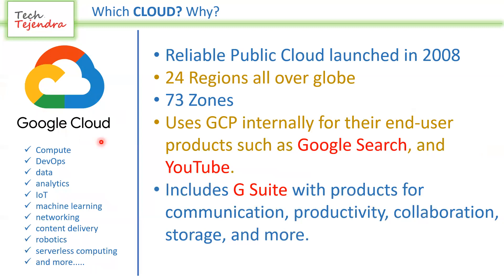Google Cloud also provides the same services as AWS, Azure, and IBM Cloud. GCP's main marketing claim is that Google's own top tools — Google Search and YouTube — run inside the Google Cloud Platform. They claim that if Google Search and YouTube perform so well globally with lowest latency, your end-user applications will also run very well. GCP was launched in 2008 and has 24 regions and 73 zones globally. Google Suite is also considered a reliable offering.